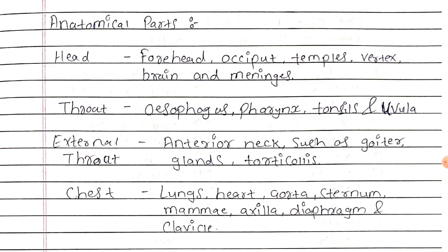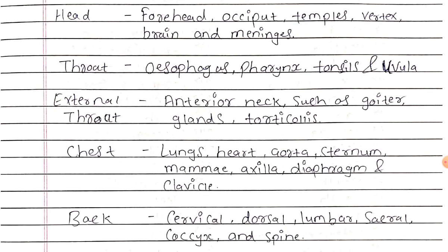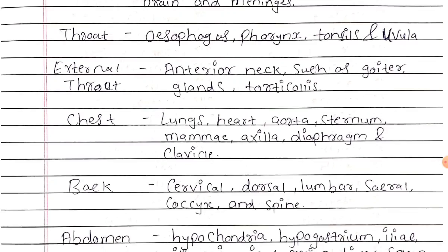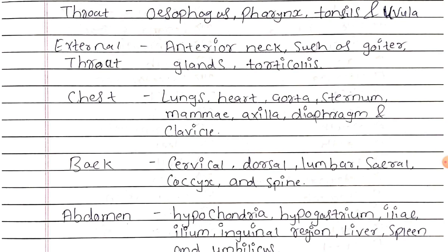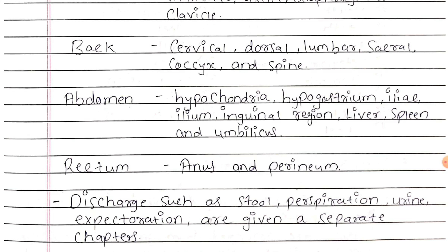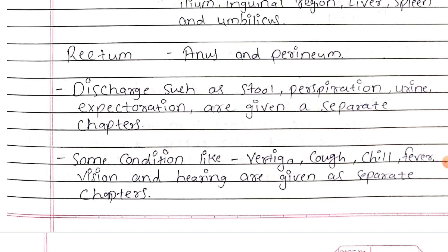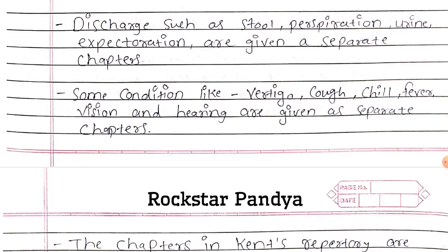Anatomical parts: Under the Head chapter, it contains forehead, occiput, temples, vertex, brain and meninges. Throat contains esophagus, pharynx, tonsil and uvula, external throat, anterior neck such as goiter, glands, and torticollis. Chest contains lungs, heart, aorta, sternum, mammae, axilla, diaphragm, and clavicle. The Back consists of cervical, dorsal, lumbar, sacral, coccyx, and spine. Abdomen contains hypochondria, hypogastrium, iliac region, inguinal region, liver, spleen, and umbilicus. Rectum consists of anus and perineum. Discharges such as stool, perspiration, urine, and expectoration are given as separate chapters.